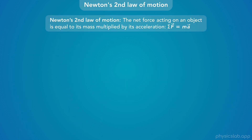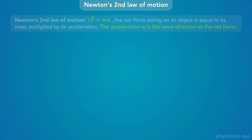Newton's second law of motion says that the net force acting on an object is equal to its mass multiplied by its acceleration, so F-net equals ma. The little arrows mean that the force and the acceleration are vectors, and we need to consider their direction. The acceleration is in the same direction as the net force.